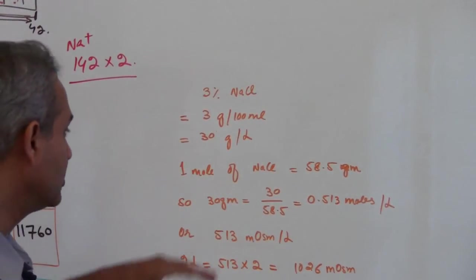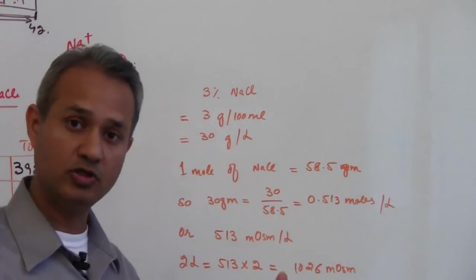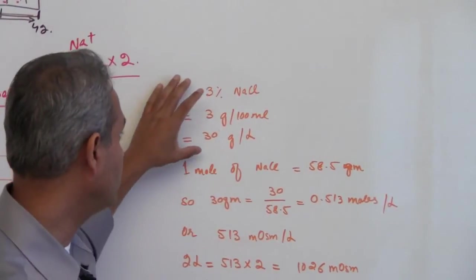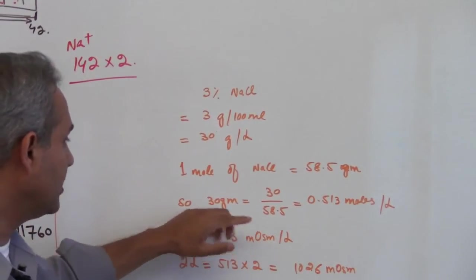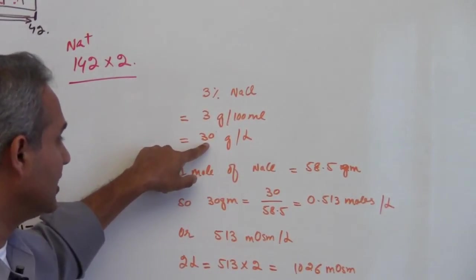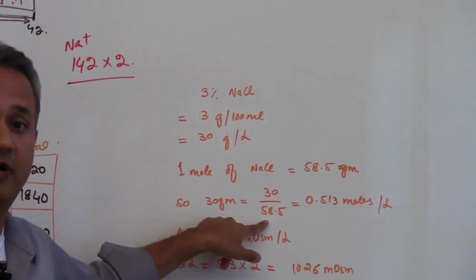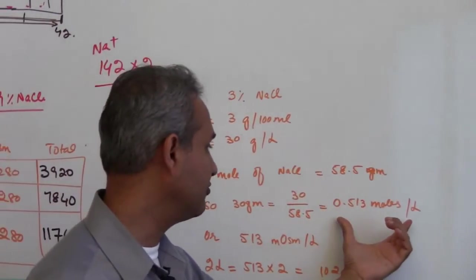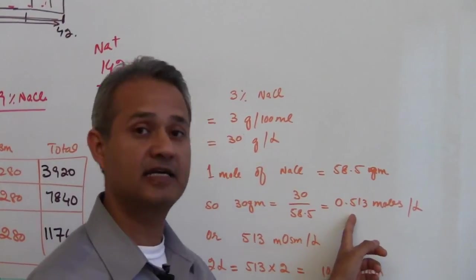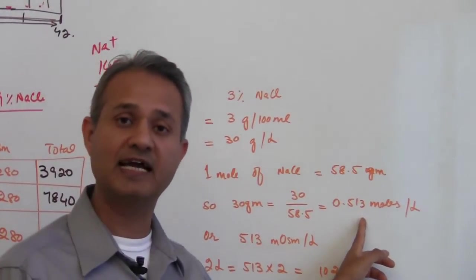So instead of 1 osmol this solution is almost looking like half osmol. But anyways the best way to handle that is to pick up the 30 gram and divide it with the 58.5 gram which is the 1 osmol unit and that would give us the exact mole or exact molarity.